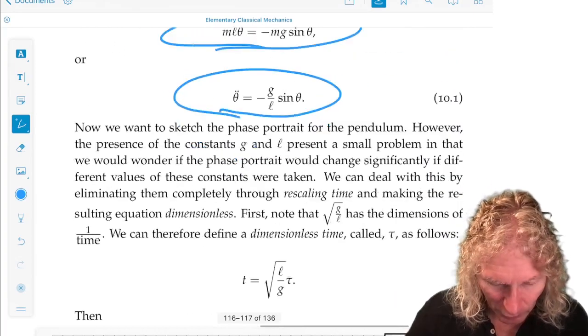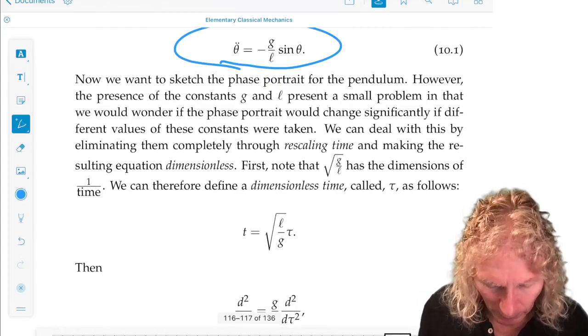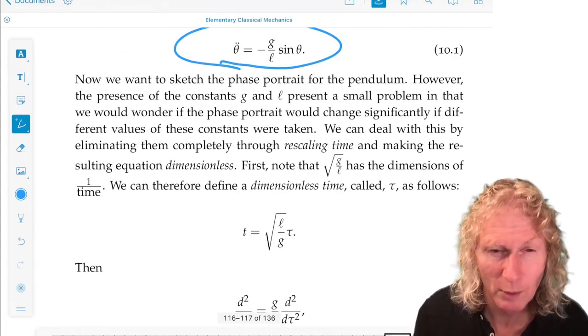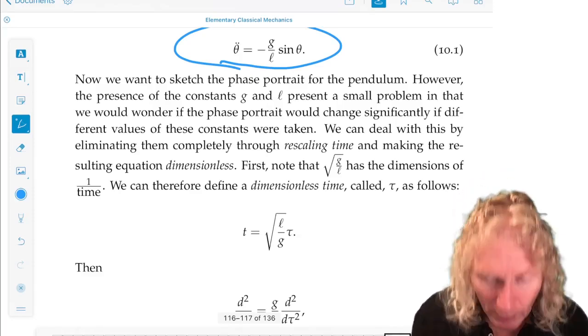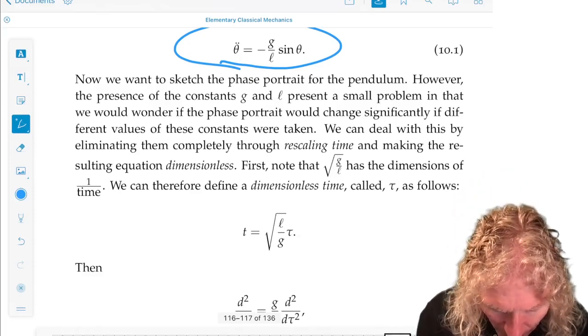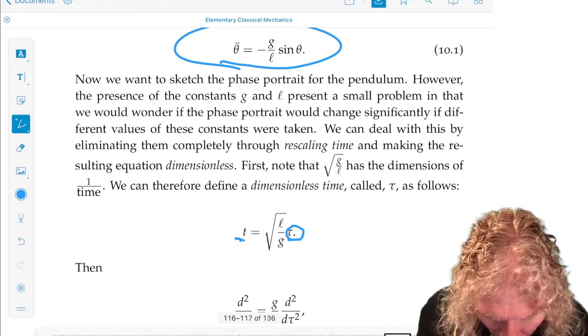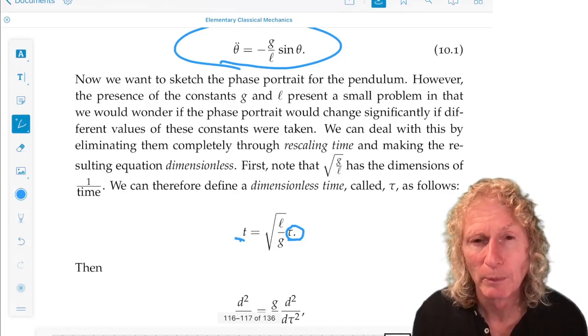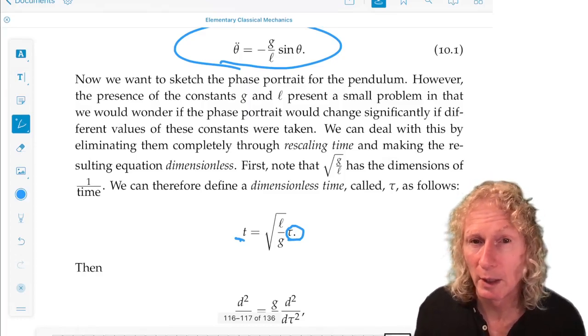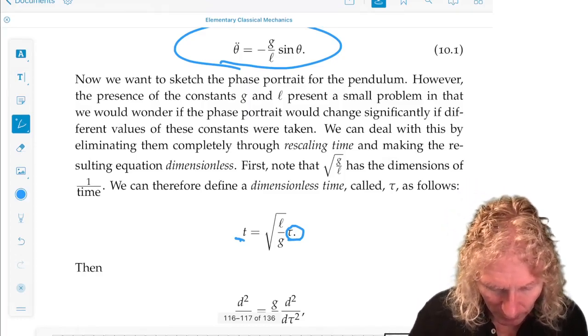This minus g over L is constant, and this is going to be useful when we compute the phase plane. We can rescale time. We have a dimensionless time tau, rescaled by the square root of L over g. L is a length, g is length divided by time squared, so tau would be dimensionless.